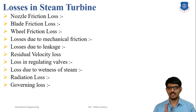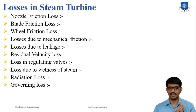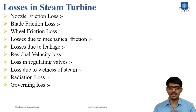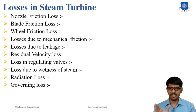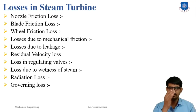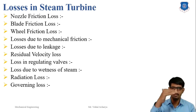Sixth is the residual velocity loss. When the kinetic energy of steam leaves the turbine wheel, the steam exits with some absolute velocity, and this kinetic energy is lost. Residual velocity loss can be reduced by using a multi-stage turbine; this loss is about 10 to 12 percent in a single-stage turbine. Seventh is the loss in the regulating valves. Before entering the turbine, steam passes through the boiler stop valve and the regulating valve, where steam gets throttled, resulting in steam pressure at the turbine entry being less than the boiler pressure.